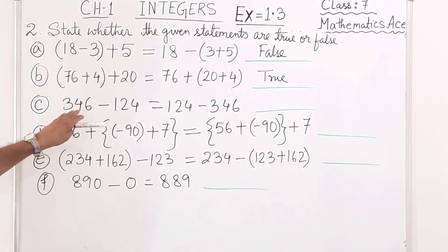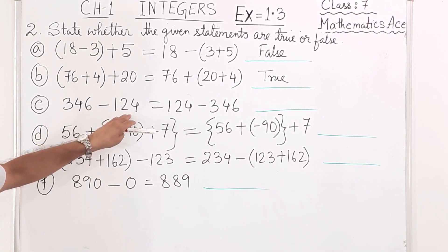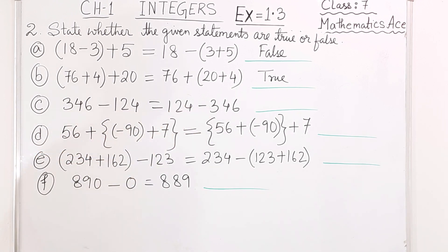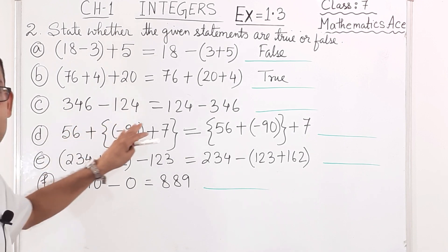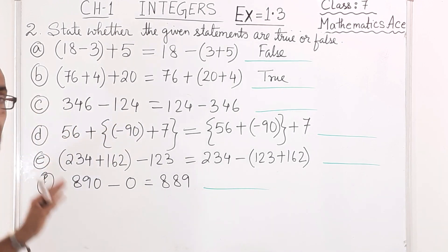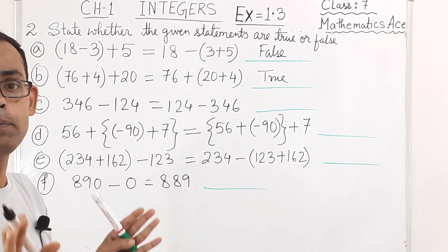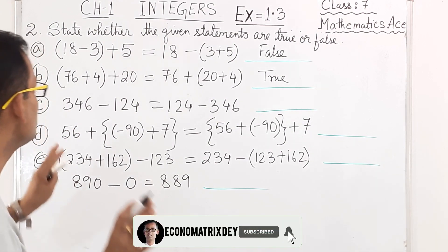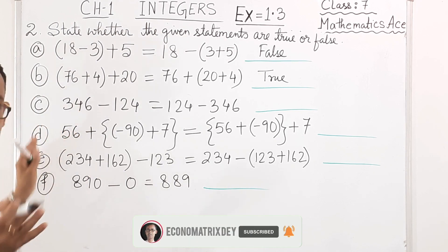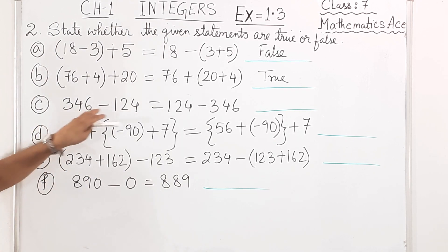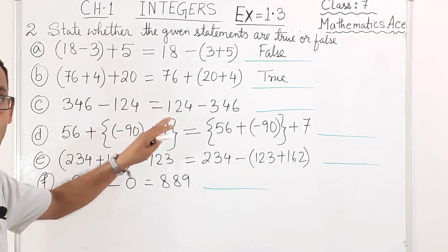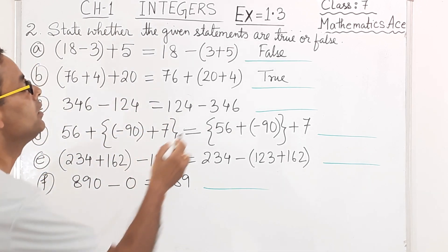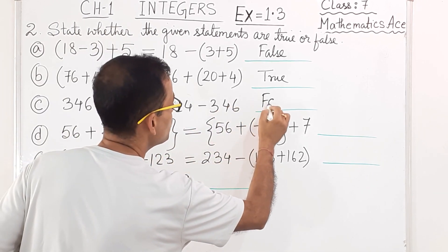Next: 346 - 124 = 124 - 346. This is a property of subtraction — specifically the commutative property of subtraction, which does not hold true. 346 - 124 and 124 - 346 will never give the same result if you change the order. So this is false.